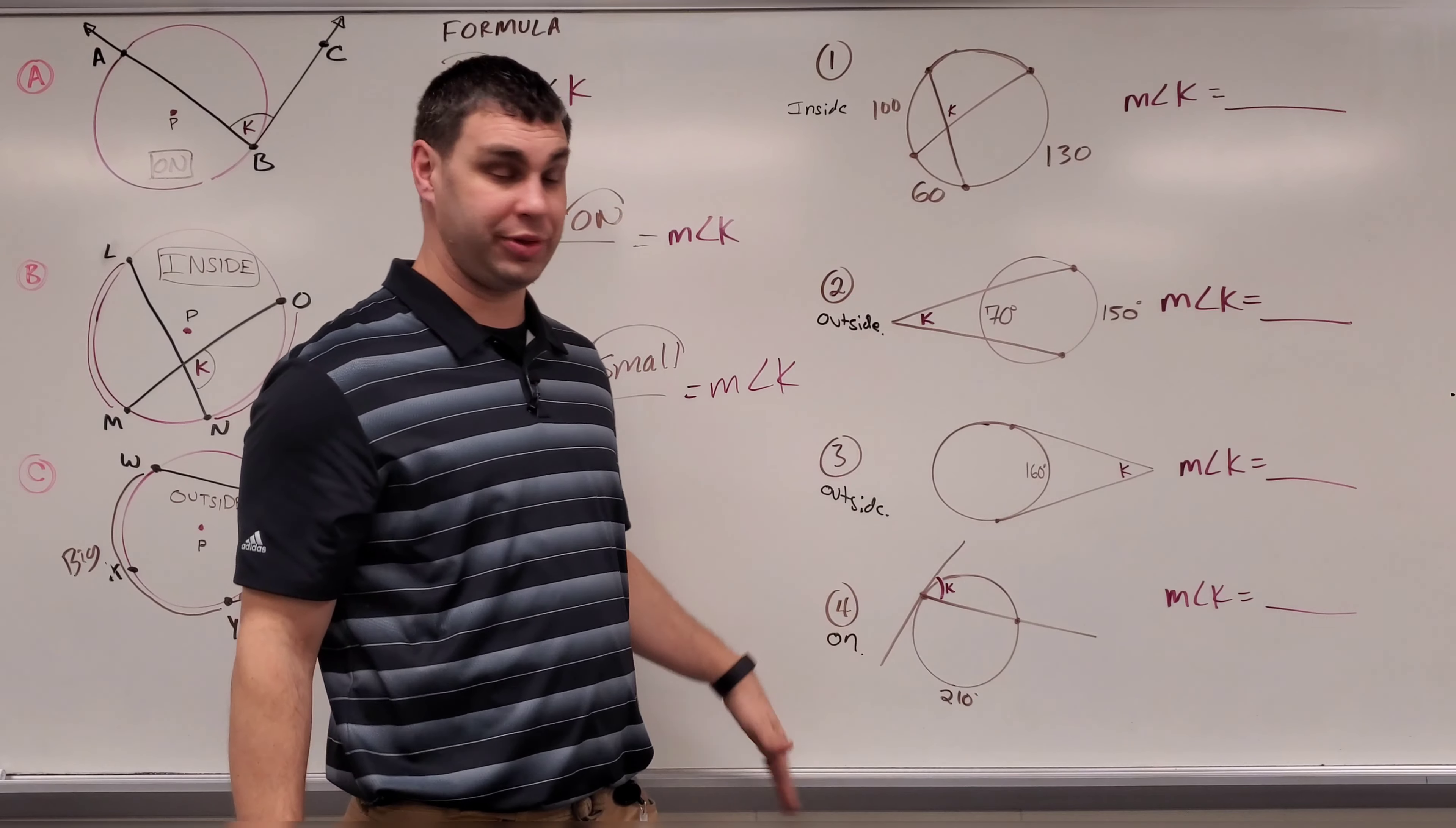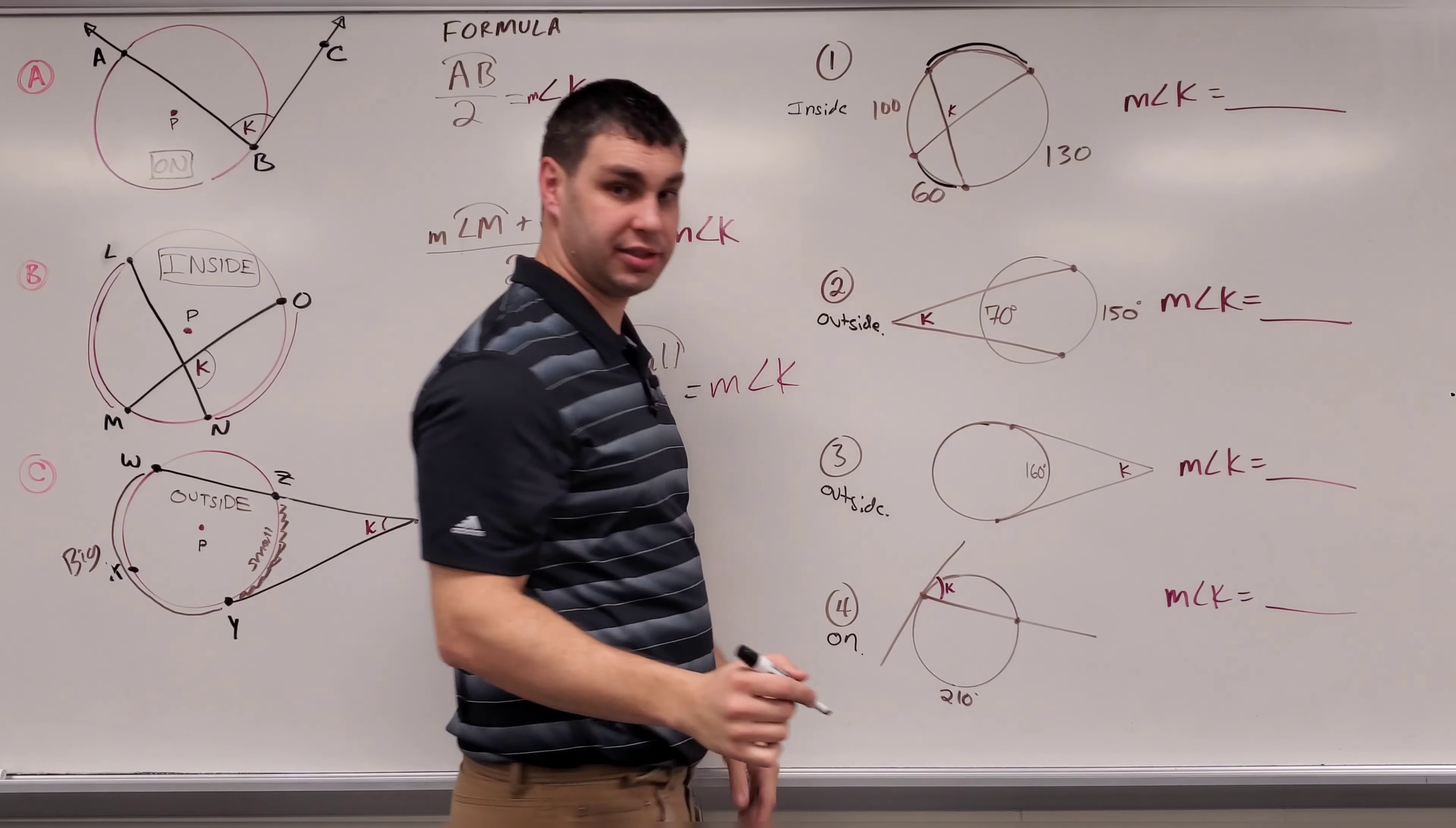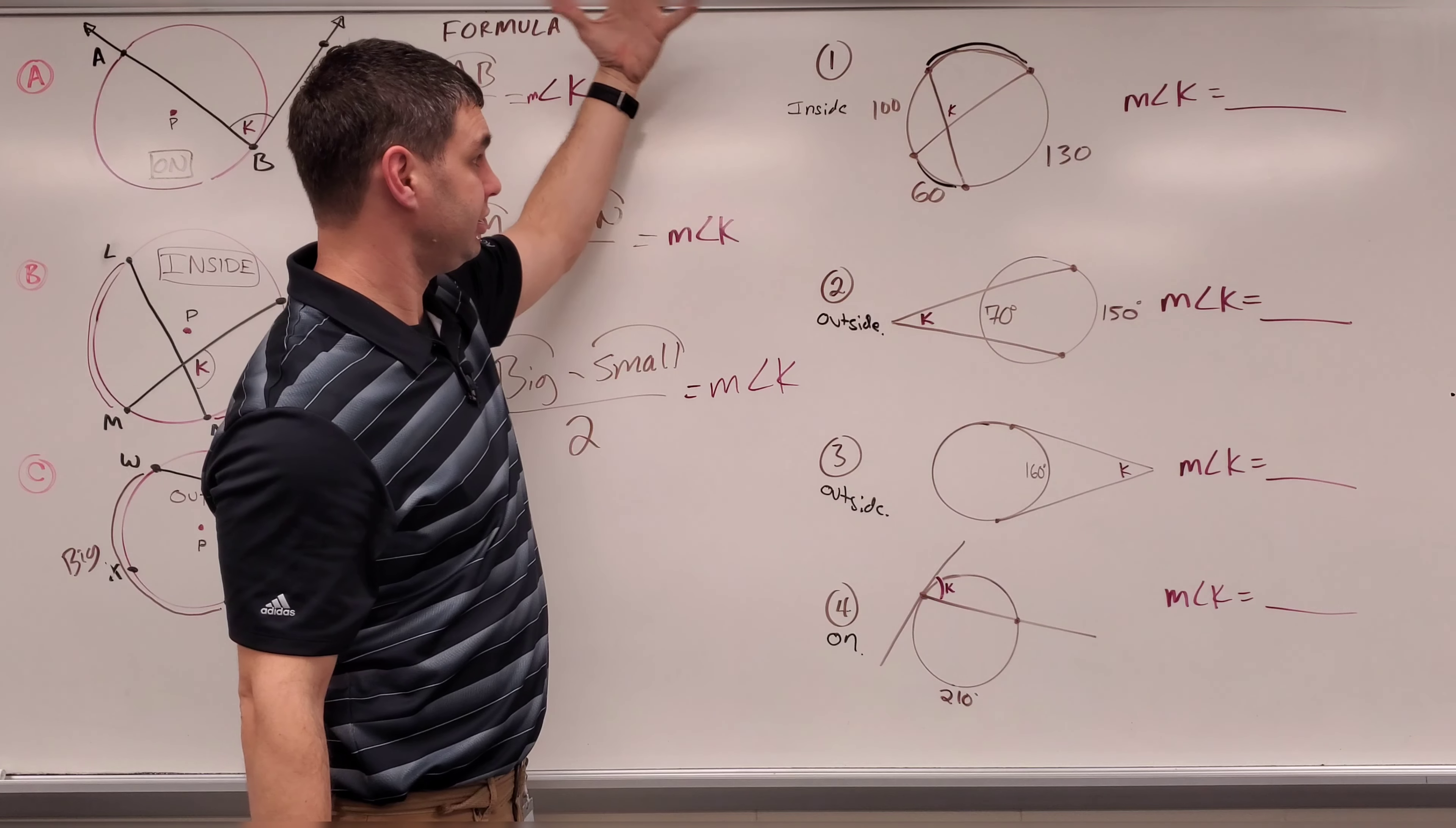Now that said, we can apply the particular formulas for each of these to our problem. With the inside one, we have to take the arcs that are on either side, divide by two to find their average, and that'll be what angle K is. So here, I need to find this arc and this arc, add those together, divide by two. This arc here, I don't know, so I'm going to have to take 360 minus 100, minus 130, minus 60, and that's going to be what's left over for this top part of that arc.